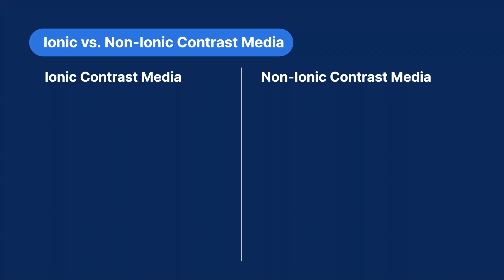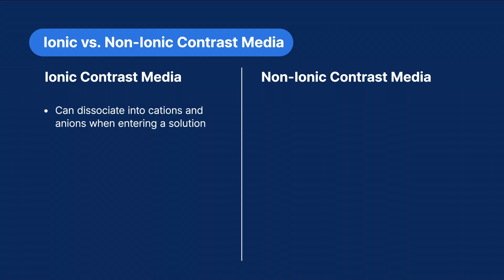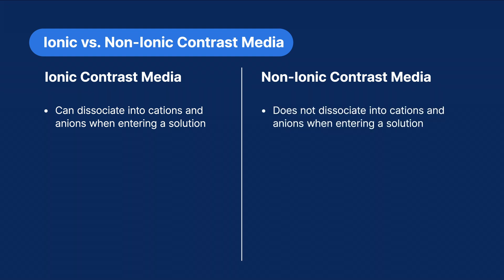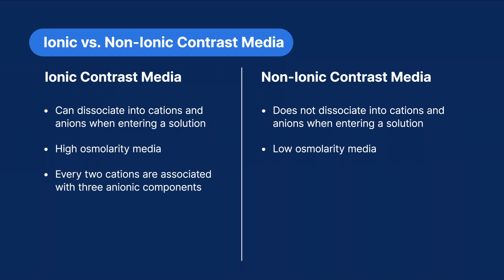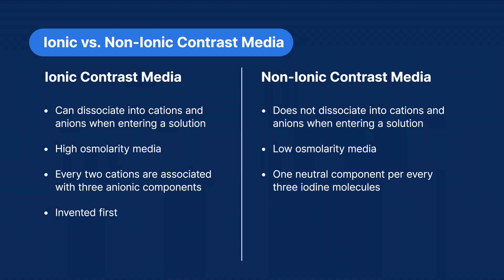Let's do a few quick comparisons: ionic versus non-ionic contrast media. Ionic contrast media can dissociate into cations and anions when entering a solution, whereas non-ionic contrast media do not. Ionic contrast media is a high-osmolarity media, while non-ionic contrast media is a low-osmolarity media. In ionic contrast media, every two cations are associated with three anionic components; in non-ionic contrast media, there is one neutral component per every three iodine molecules. Ionic contrast media were invented first and are considerably more toxic, while non-ionic contrast media were invented later and are comparatively less toxic.